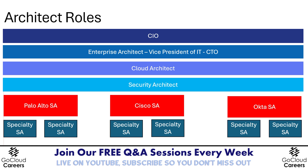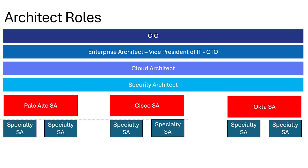There's another subset: the security specialty solutions architect. At companies like Palo Alto, Cisco, or IBM, the traditional solutions architect handles pre-sales design and selling, but may not know all products in extreme depth. So vendors have specialty security solutions architects who are experts in one thing — like an encryption principal or distinguished solutions architect for complex encryption scenarios, or specialists in identity and access management, or internet service provider security.